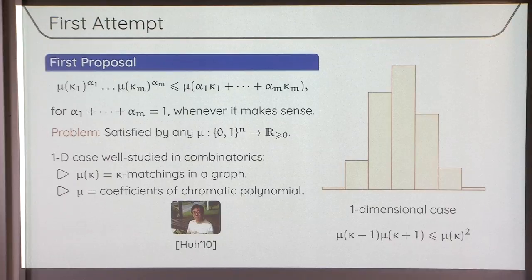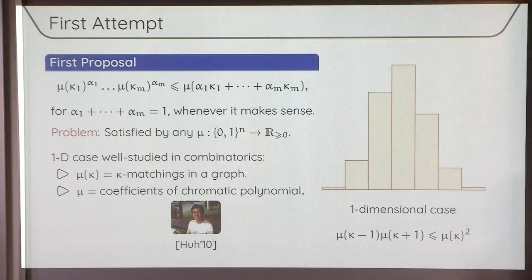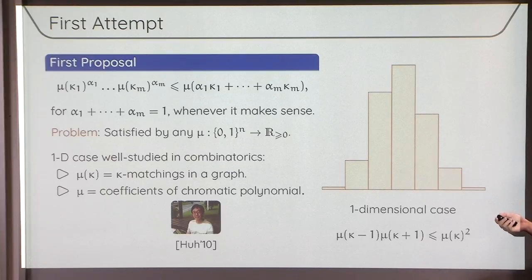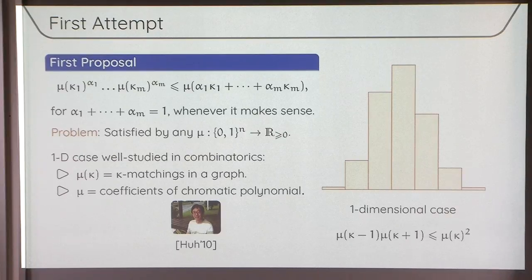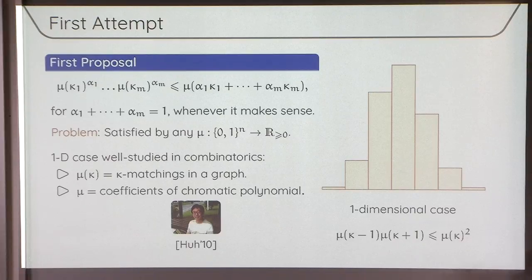The problem with this definition is really when you go to higher dimensions. If you think of any function supported on the vertices of the hypercube, it's going to automatically satisfy all of these inequalities. That's because no vertex of the hypercube is a convex combination of the others, so these inequalities aren't telling you anything. We certainly don't expect a class as large as all functions on the hypercube to be algorithmically tractable.